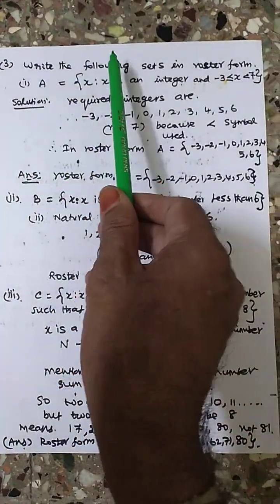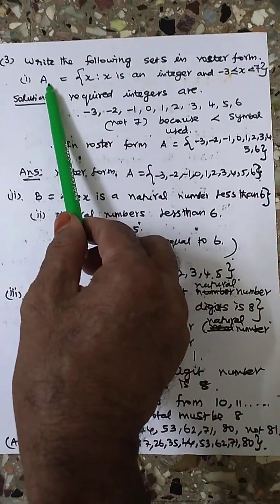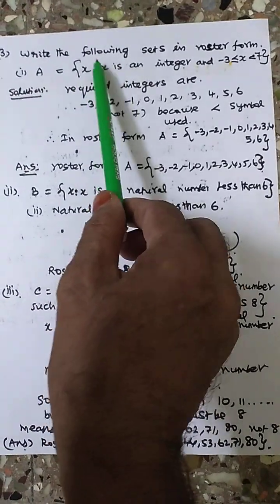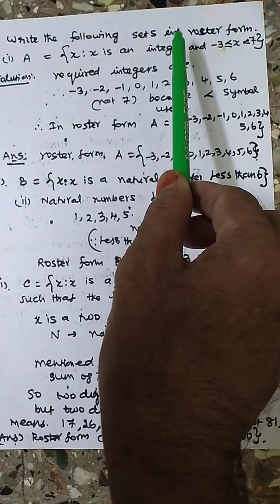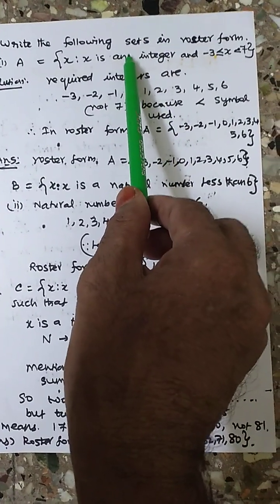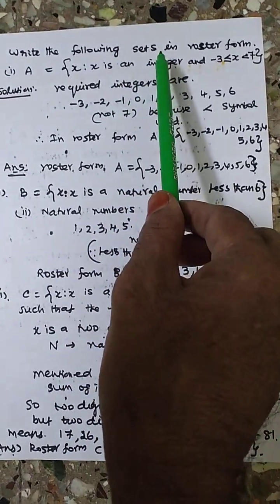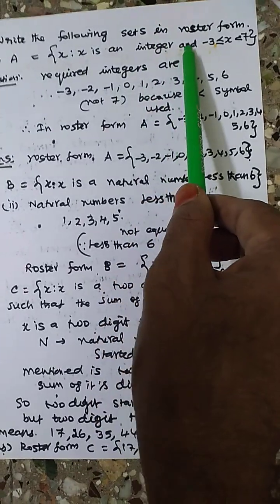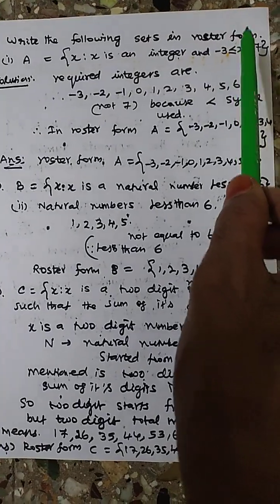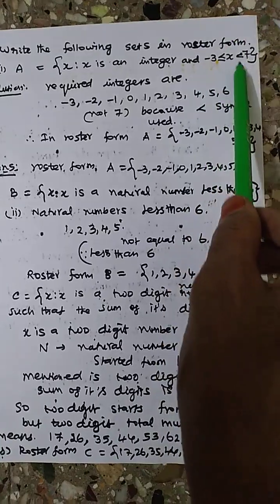Let's write the following sets in roster form. The first sum: A is the set of elements X such that X is an integer. Integer means positive and negative are available — 0, 1, −1, +1, like this. And X is less than or equal to −3.